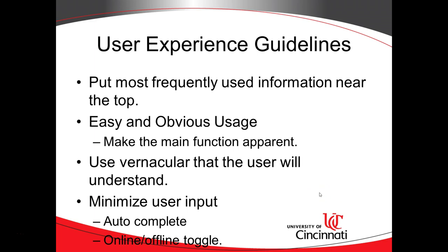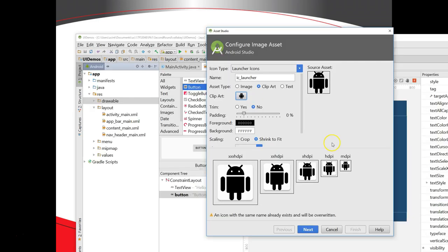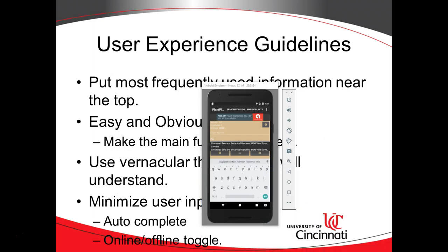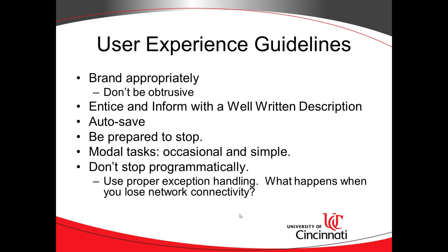Minimize user input. We like autocomplete and direct manipulation with things like maps and images. Keep an offline set of data and allow a smooth transition if you lose network access — it's possible to sense going offline and flip over to a locally cached copy of data without even telling the user. One button I removed on the GPS screen was an online/offline toggle, because the application knows when it's online or offline. I don't need the user to tell me that.